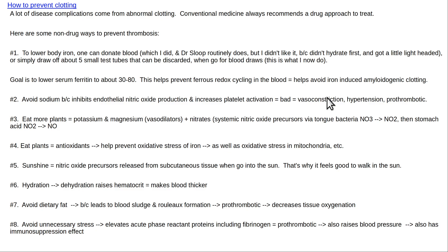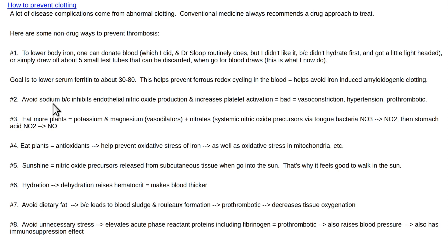Vasoconstriction causes hypertension, which over time damages arterial walls, reduces oxygen delivery to tissues, and leads to atherosclerosis — it's prothrombotic. Number three: eat more plants. Plants provide fiber, which protects against leaky gut and leaky-gut-related clotting. Plants also provide potassium and magnesium, which are both vasodilators. Our ancestors probably ate a potassium-to-sodium ratio of about 25 to 1, whereas modern people eating processed food consume about 10 times more sodium than potassium — which screws up plasma membrane gradients and promotes hypertension.